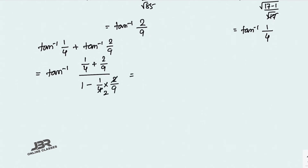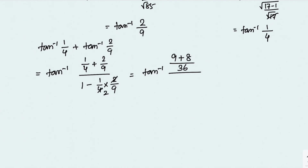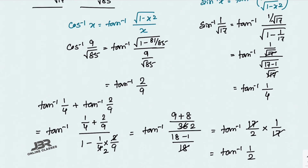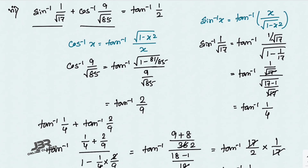So we get tan⁻¹((17/36) / (34/36)) = tan⁻¹(17/34) = tan⁻¹(1/2). The 17s cancel and the final answer is tan⁻¹(1/2). Sum number 7 is done.